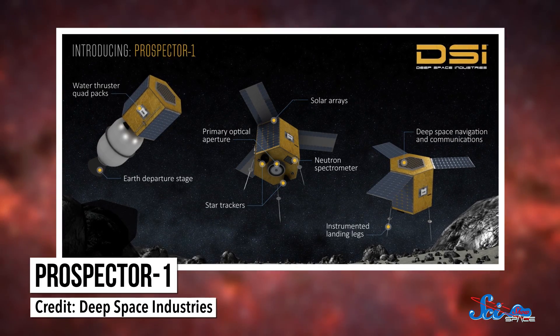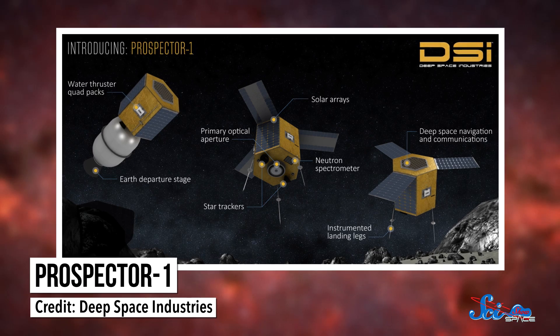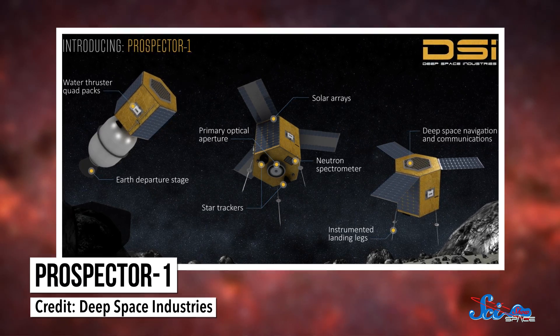Once it gets there, Prospector One will use visual and infrared scanning to search both on and below the asteroid's surface for water and other materials. When it's done with mapping, the craft will land on the asteroid to continue studying its geology.